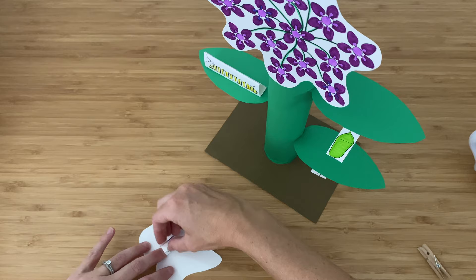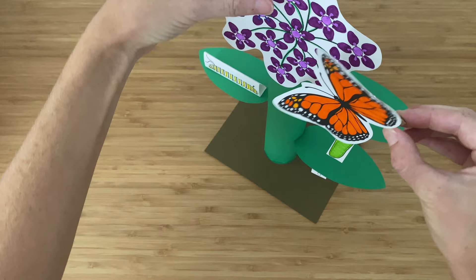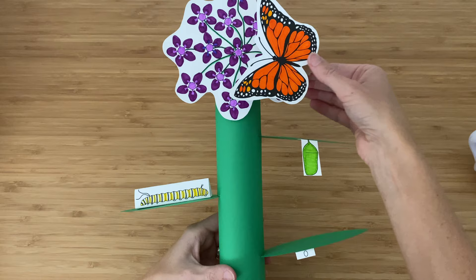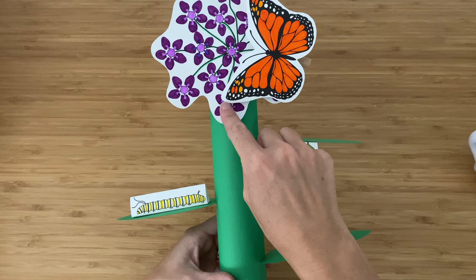And then you have a choice for how you would like to attach the butterfly. I like the clothespin option because it makes it easy to hook the butterfly on like that. But then when you want to show how the adult butterfly lays the egg, it can fly down here. You could use a clothespin or a paper clip as well to hook the butterfly to the flower. Or you can just glue it right on there.